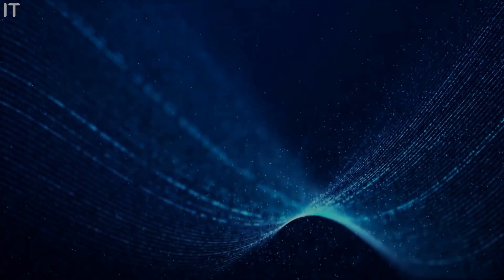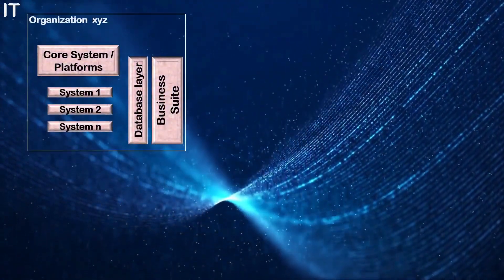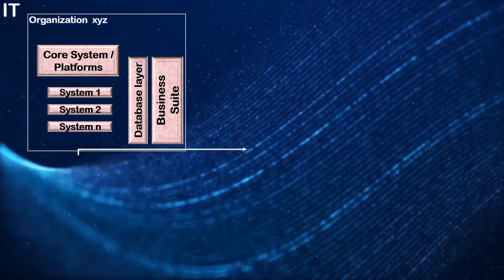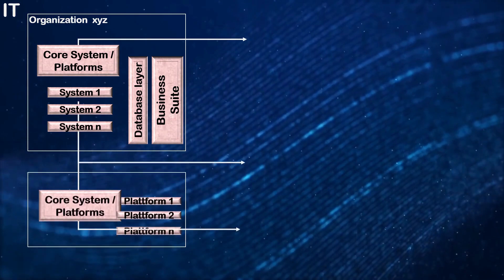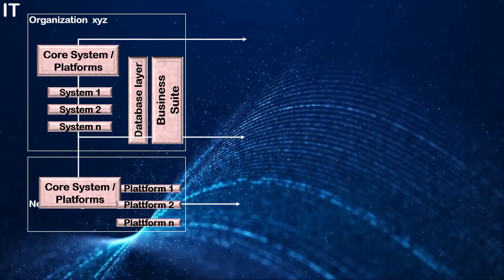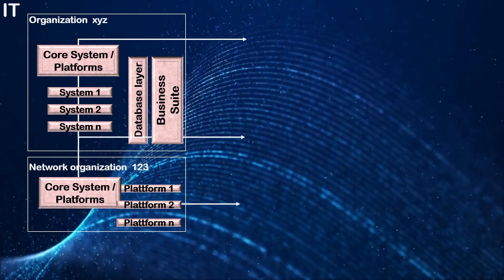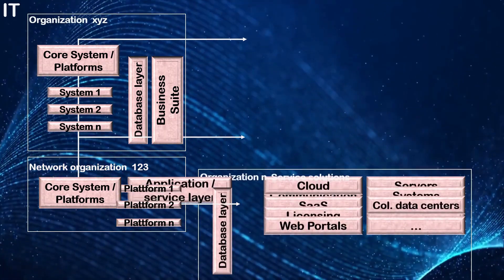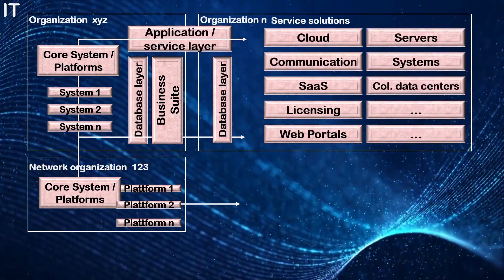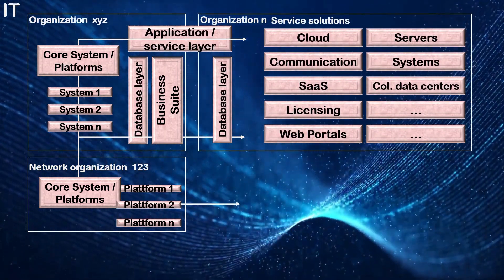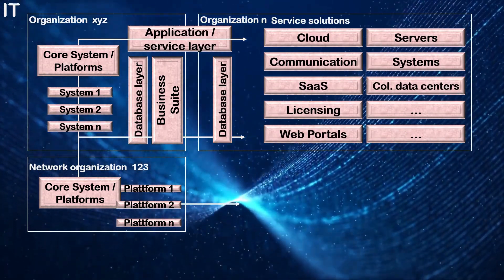Starting on the IT side, the typical setup of IT in an organization is characterized by one or multiple core platforms which can be connected to various internal or external systems. Via an application and connection layer, third parties or external vendors can provide products and services to the organization. Generally, the network organization is influenced by interest-controlling stakeholders and consumers, which represent the end users within the organization of the technology and system being applied.